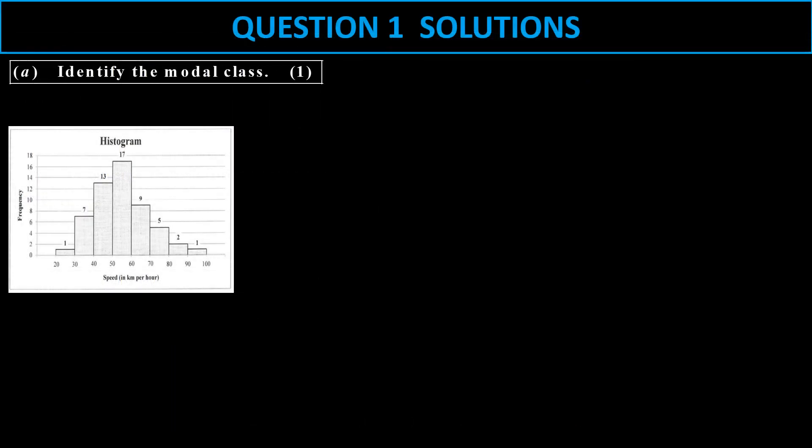Here we have to identify the modal class. If you look at the modal class, we see the highest frequency there is at 17. So the corresponding modal class is between 50 and 60. As you can see there, there is at 17 between 50 and 60.